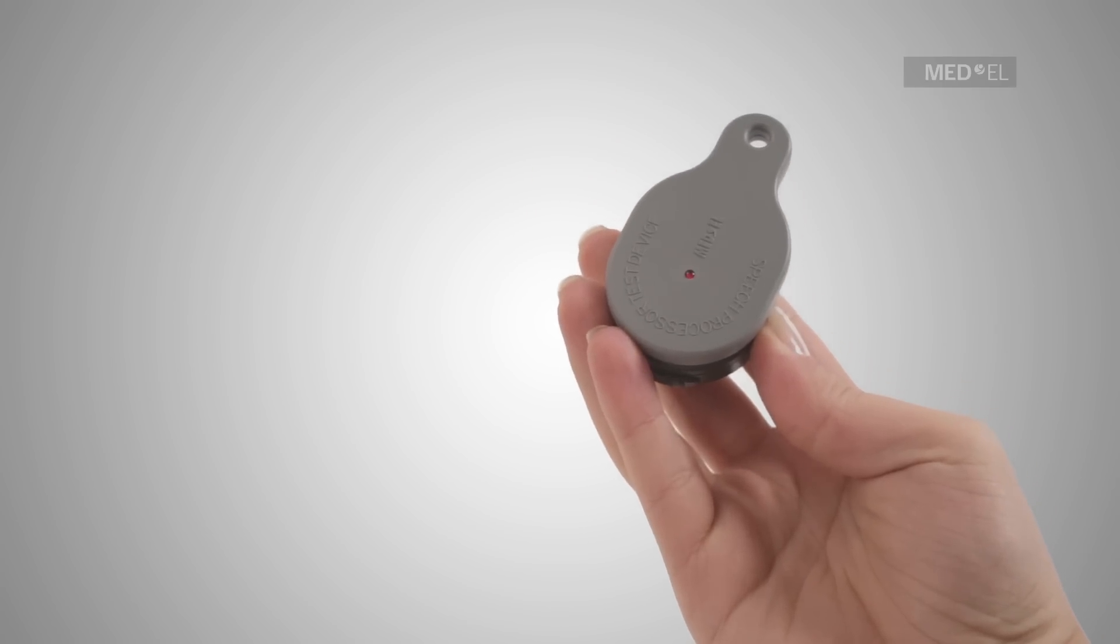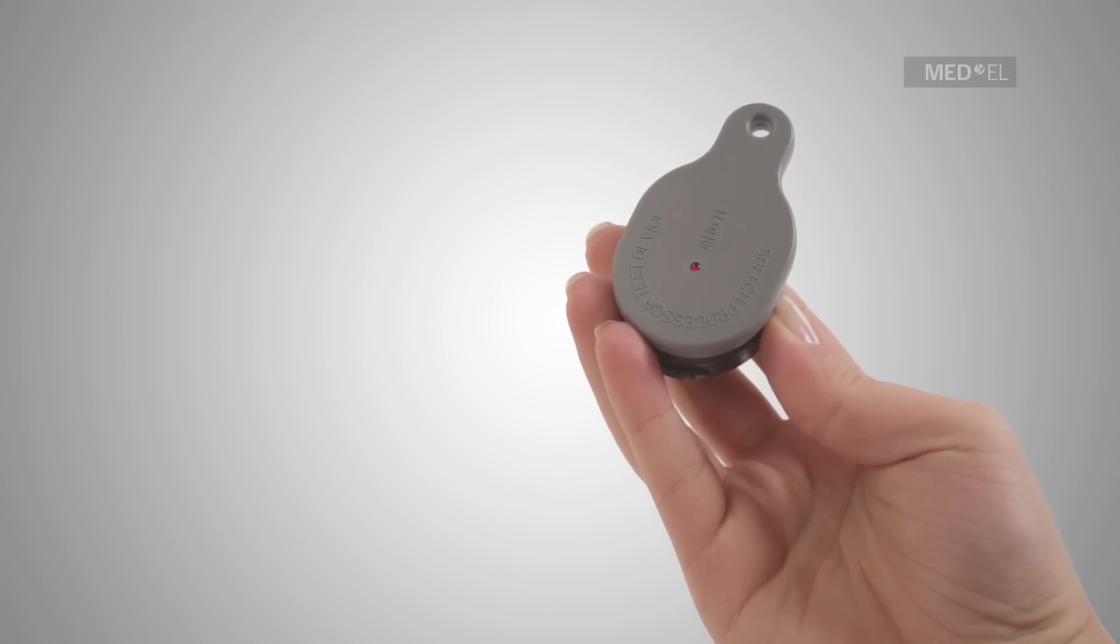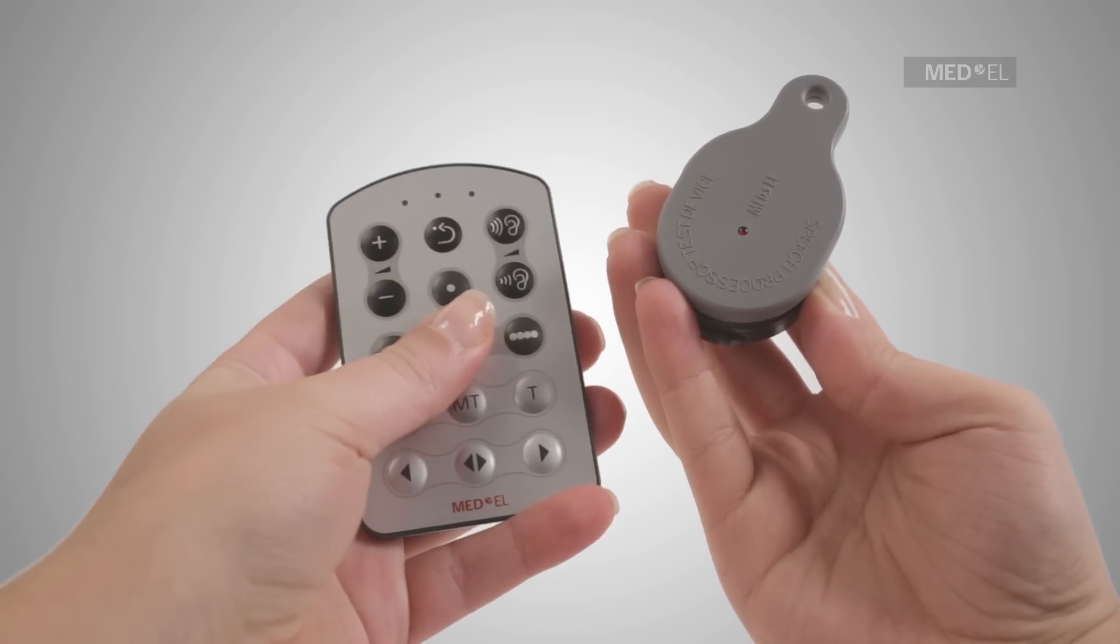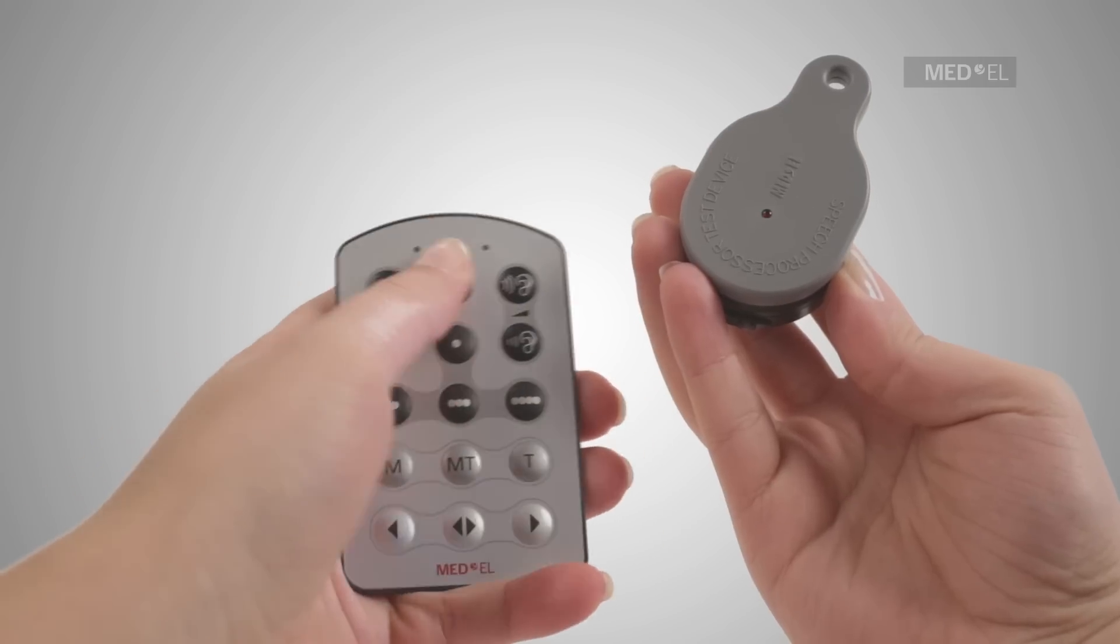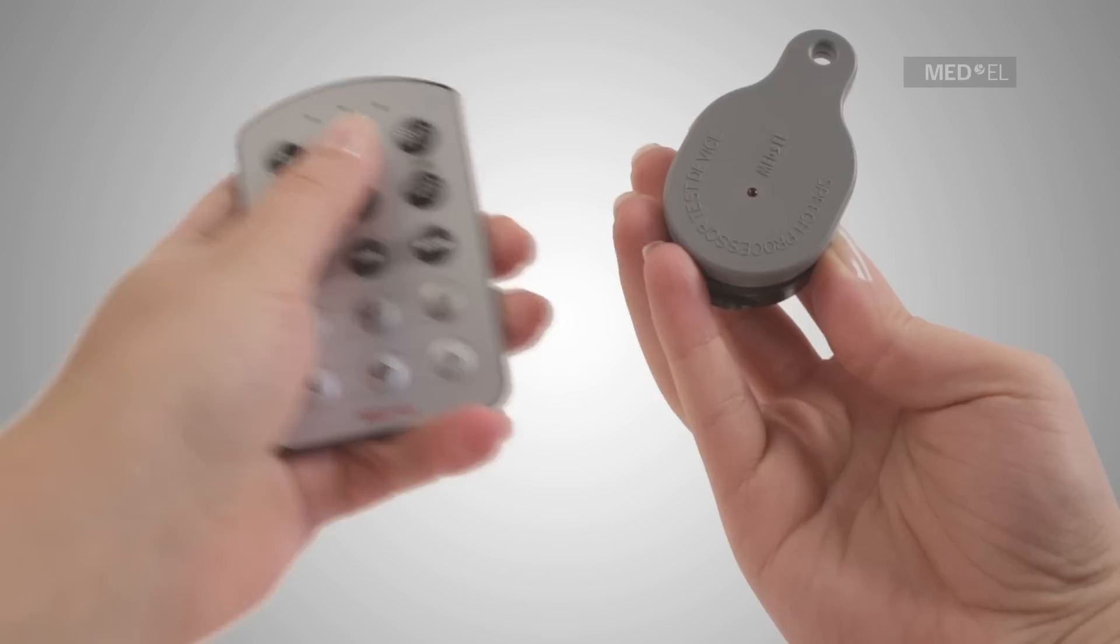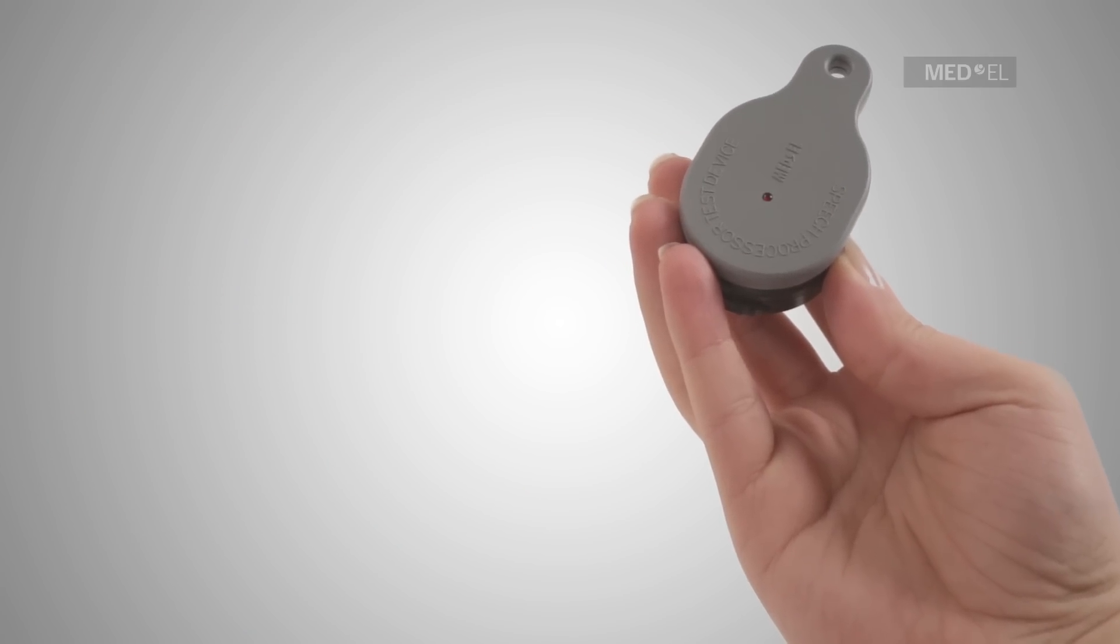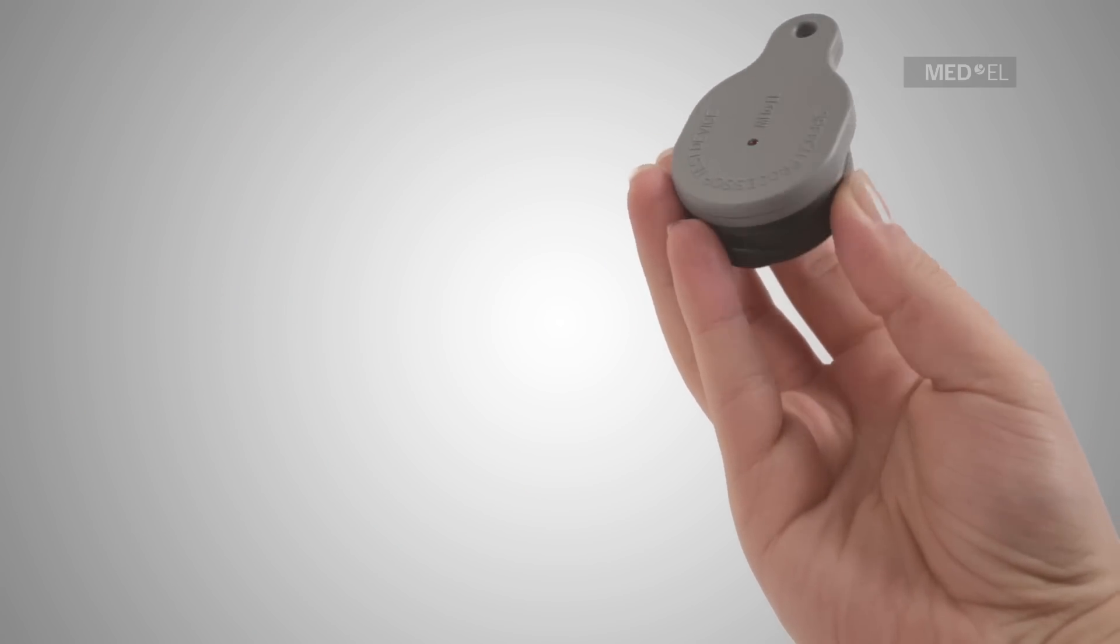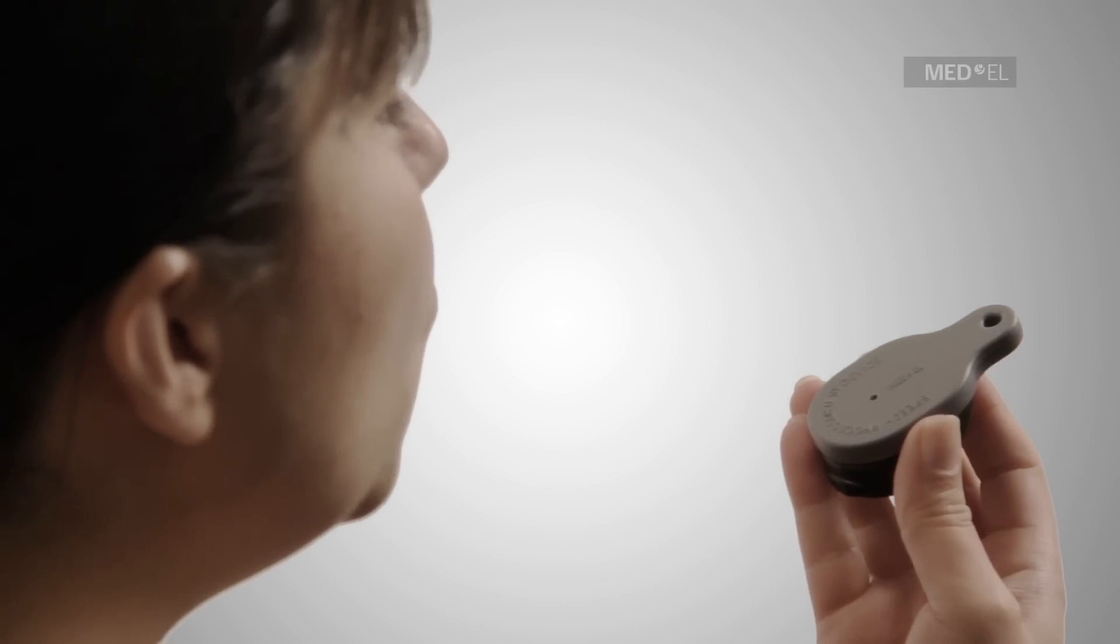If the red light on the Speech Processor Test Device does not flicker or stays on constantly, adjust the volume of the Rondo using the FineTuner Remote Control Unit. After adjusting the loudness, the flickering of your voice should be recognizable.